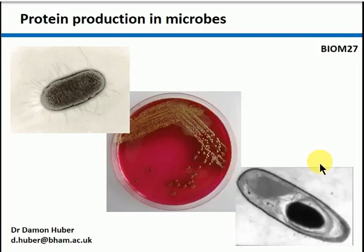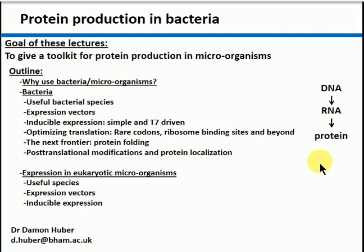We're here for the second part of the protein production microbes lecture. Last time we covered most of the standard central dogma as a theoretical toolkit for designing and troubleshooting protein production strategies. We covered which bacteria to use, protein production bacteria including useful bacterial vectors and expression vectors. We've looked at inducible expression driven by different types of promoters — simple on-off switches like the lactose promoter and the arabinose promoter — and more complicated systems like T7-driven protein production.